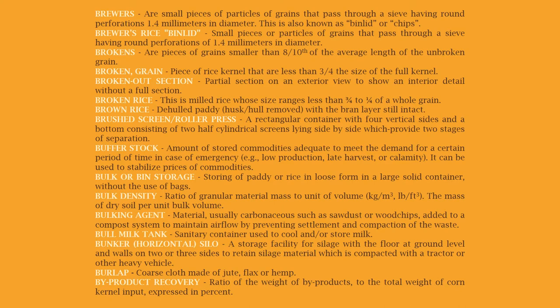Brokens: pieces of grain smaller than eight-tenths of the average length of the unbroken grain. Broken grain: pieces of rice kernel that are less than three-quarters the size of the full kernel. Broken out section: a partial section on an exterior view to show an interior detail without a full section. Broken rice: milled rice whose size ranges from less than three-quarters to one-quarter of a whole grain.